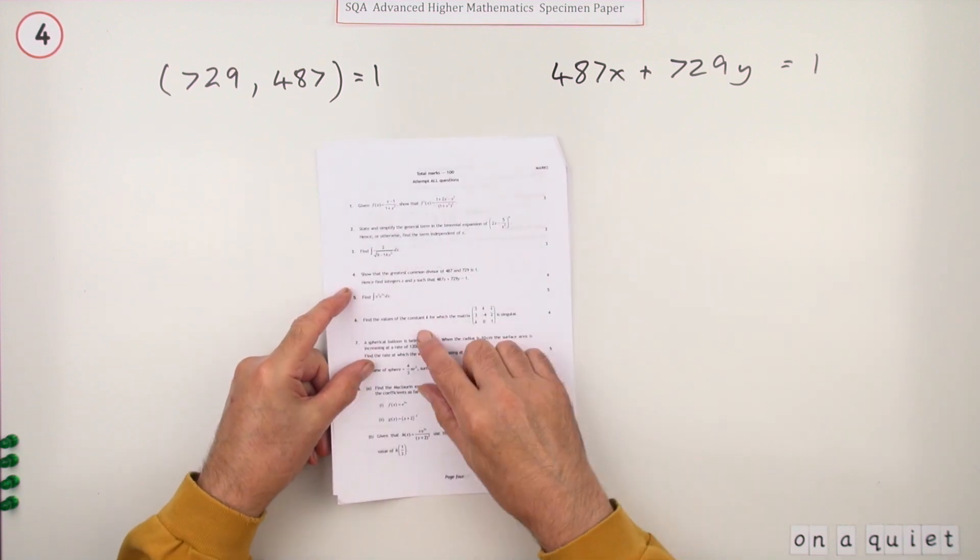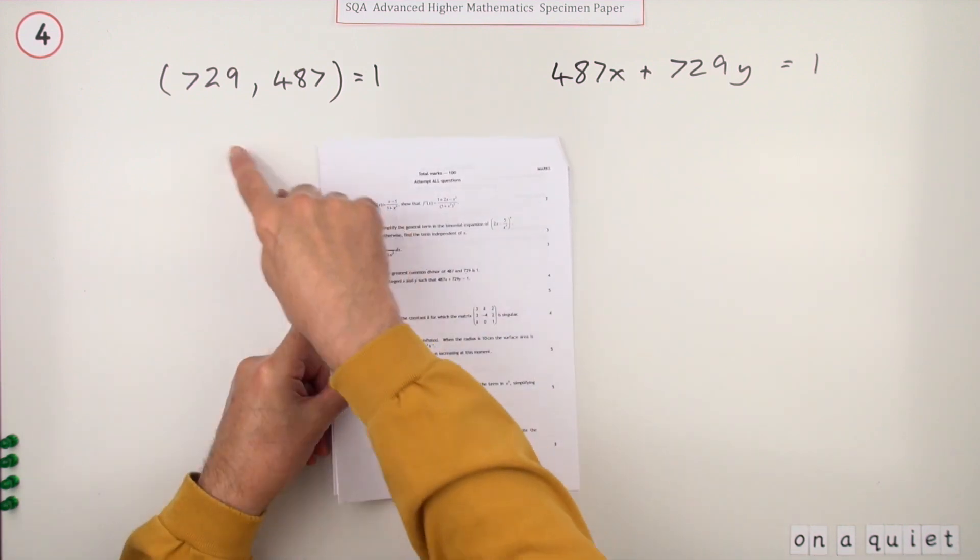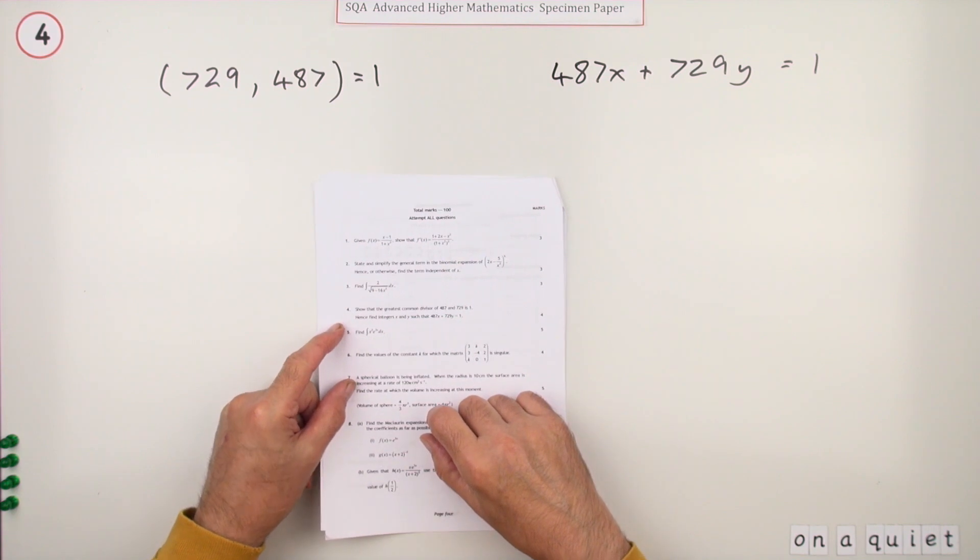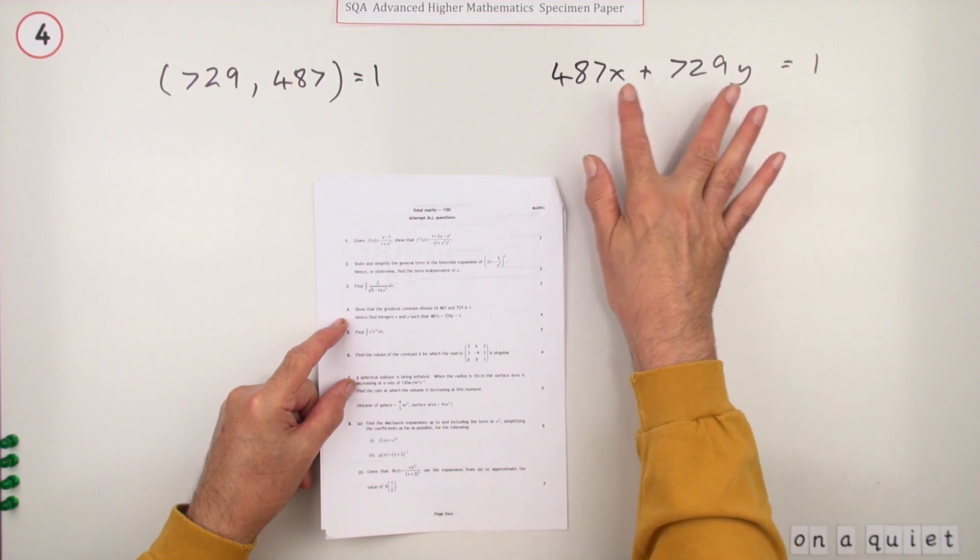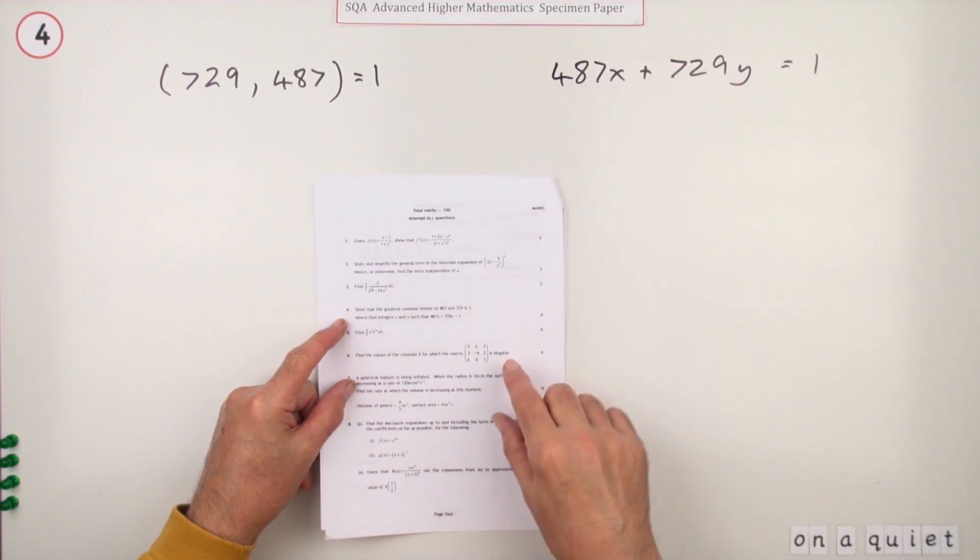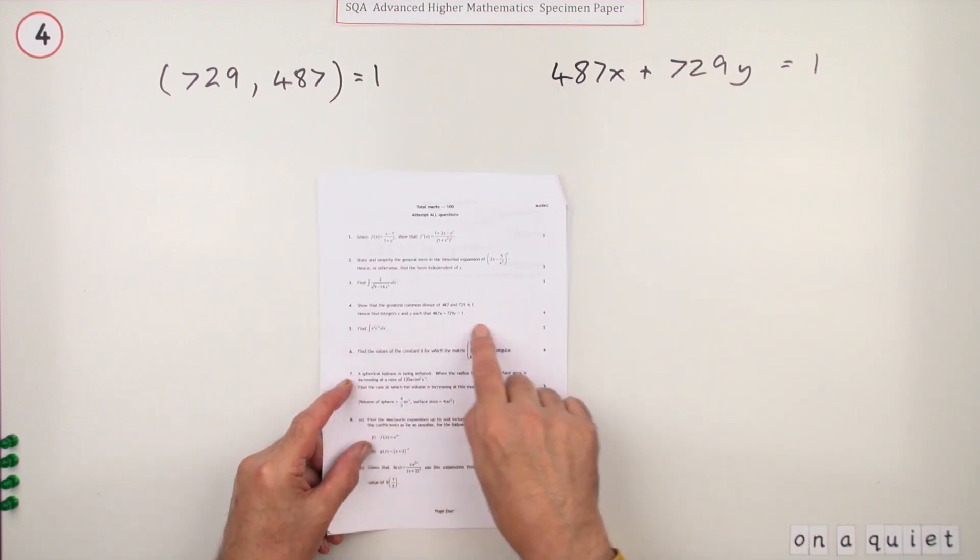So number four then from this specimen paper. Four marks for the Euclidean algorithm and also solving this Diophantine equation, meaning an equation where we're only considering integer roots. First of all, it's slightly different.